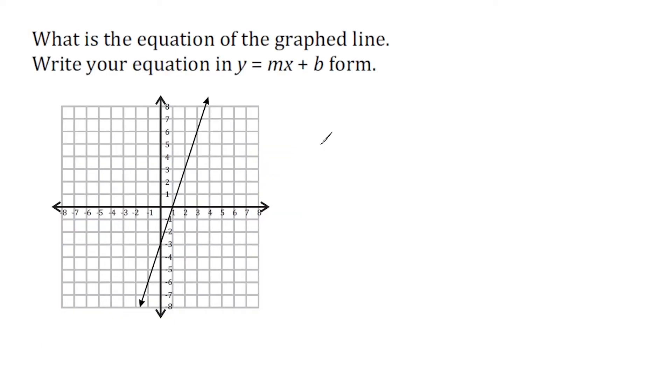Alright, we have to write the equation of this line in y equals mx plus b form. So we know our equation is going to start with y equals, and we're going to figure out the slope and write that as the coefficient of x. And at the end, we just write where our line crosses the y-axis. And we can see that our line intersects the y-axis right at negative 3. That means at the end, we just write minus 3.